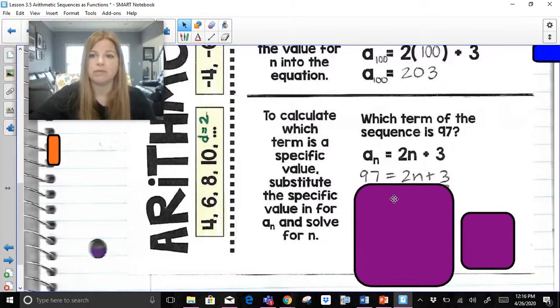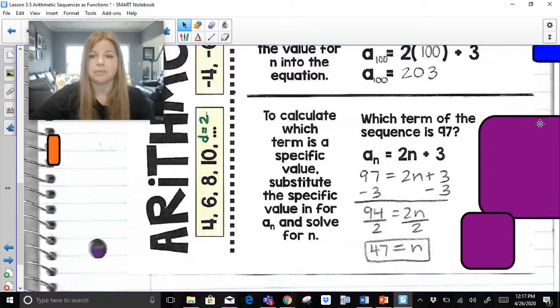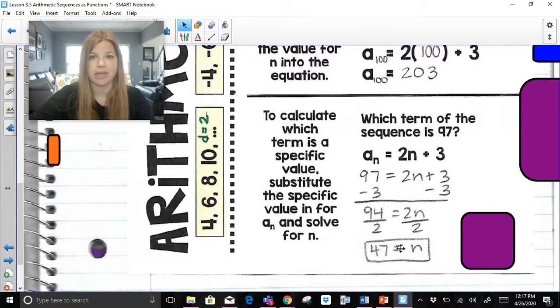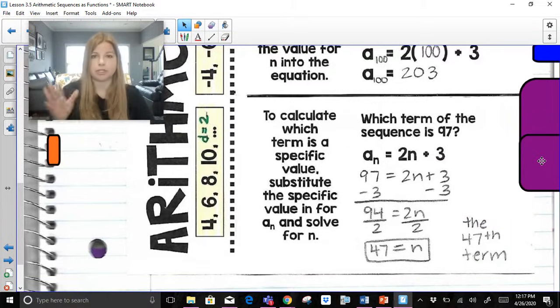...we solve for that number term is we substitute 97 in for the entire a sub n value. So if 97 gets substituted in for a sub n, and I solve for n, and I end up getting 47, that would mean the 47th term of that sequence would actually be 97.